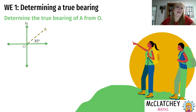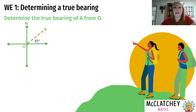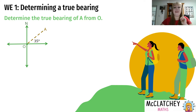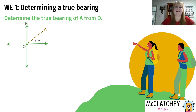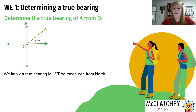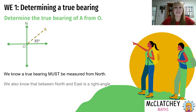In our first worked example, the key is reading the language carefully. We're always thinking about where we are — reading from that position and looking out to another. We have our compass viewed from above, north facing upward. Point A is where we're looking out to; we are standing at O, the origin. It's really important to imagine yourself standing at the point you're looking from, looking out to the other place. Bearings are always measured from north.